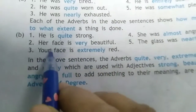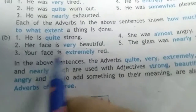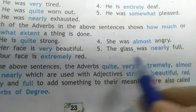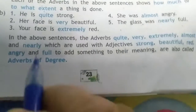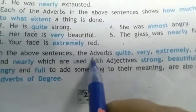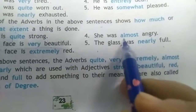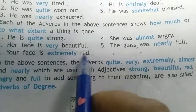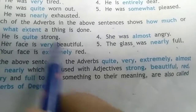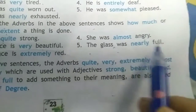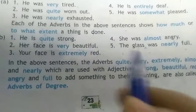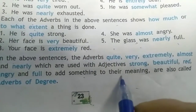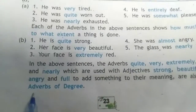More examples of adverb of degree: 'He is quite strong.' 'Her face is very beautiful.' 'Your face is extremely red.' 'She was almost angry.' 'The glass was nearly full.' In these sentences, the adverbs quite, very, extremely, almost, and nearly are used with adjectives — describing adjectives. The adjectives here are strong, beautiful, red, angry, and full. Words used with adjectives to add to the meaning are called adverbs of degree.